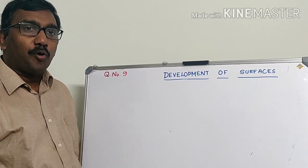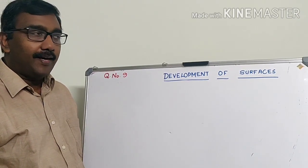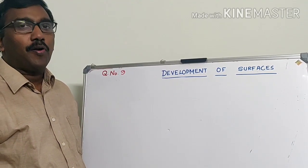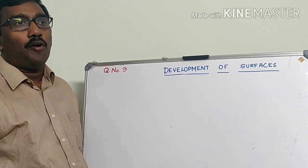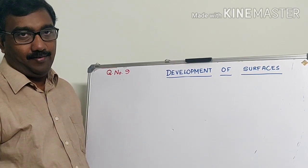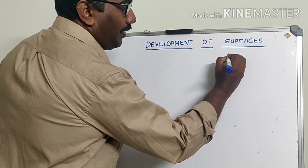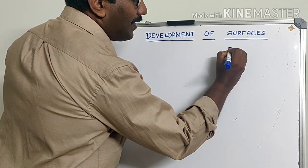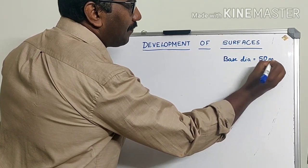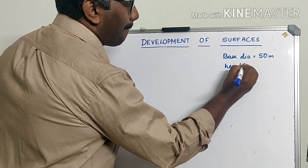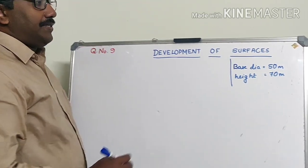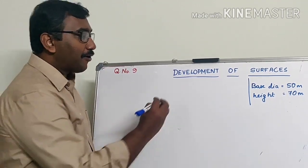The dimensions of this particular problem — the base diameter is 50 meters and height is 70 meters. You cannot draw that on a sheet directly, so you have to go for scale. Since we cannot directly use these dimensions, you have to go for scale.